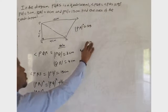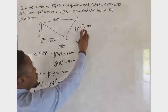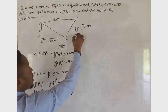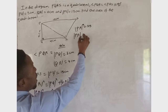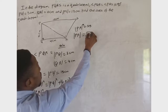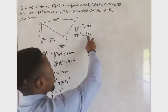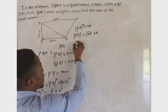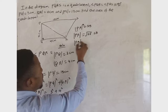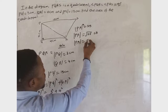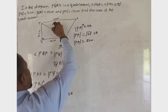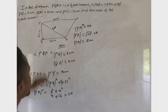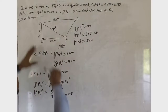In order to find the side PR, we take the square root of both sides. So PR equals the square root of 25, which is 5. Therefore our side PR is 5 centimeters.